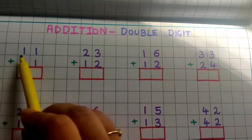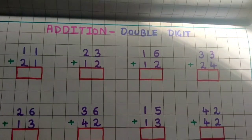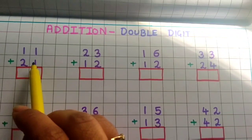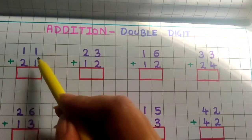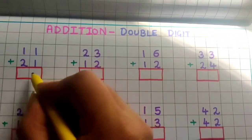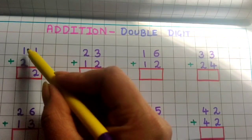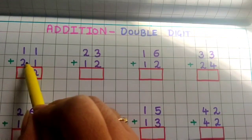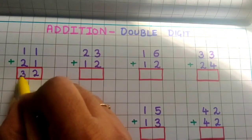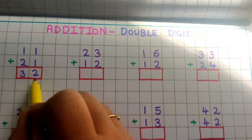Now see the first problem: 11 plus 21. So first what we are going to do children? We are going to do the addition of the numbers present in the ones place. That is 1 and 1. So 1 plus 1 is 2. Now we will do the addition of the numbers present in the tens place — that is 1 plus 2. It is 3. So I will write 3 in the tens place. The answer is 32.